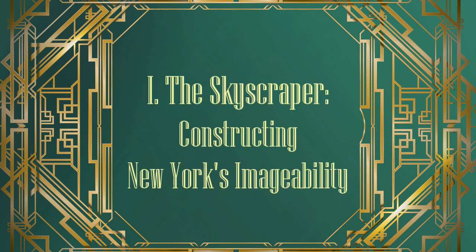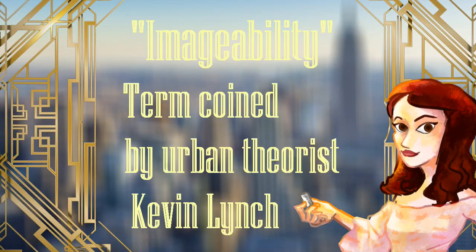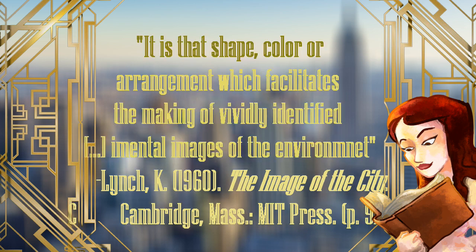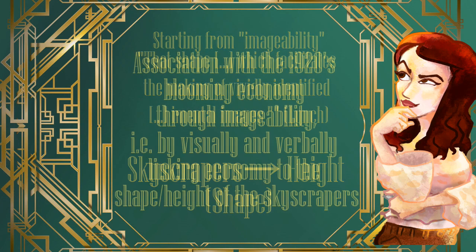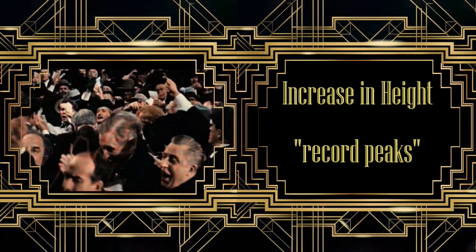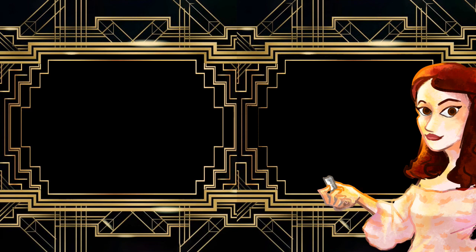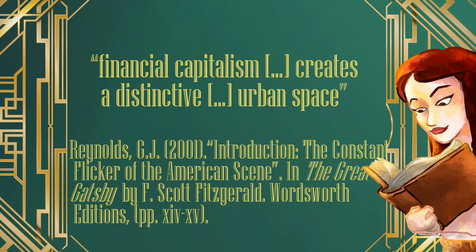The first symbol I'm going to focus on is New York's skyscrapers. They emerge as a dominant symbol and contribute to the city's imageability — that is, the way we imagine and construct the mental limits of the city in our minds. Associated with great heights, the skyscraper becomes a symbol of money and stocks in the film. Early on, Nick mentions that stocks reached record peaks and Wall Street boomed in a steady golden roar. The visualization of this scene is done by representing vertical piles of golden coins.